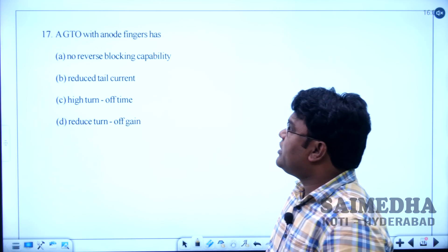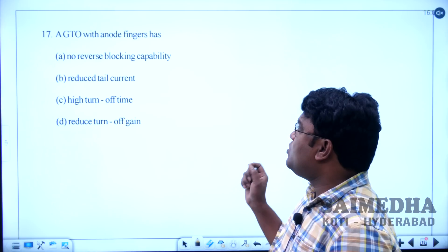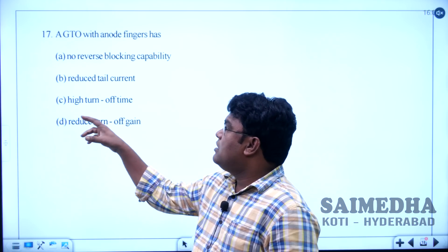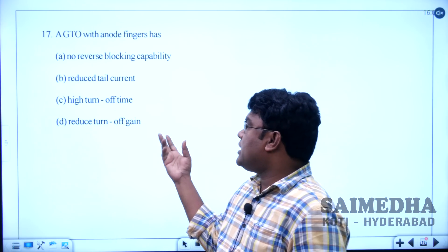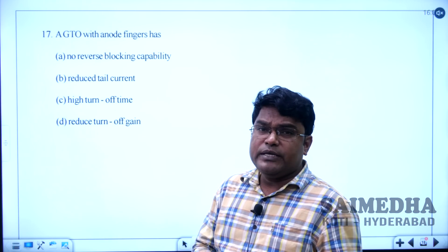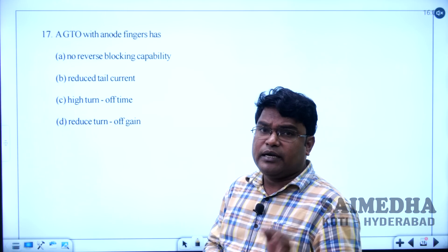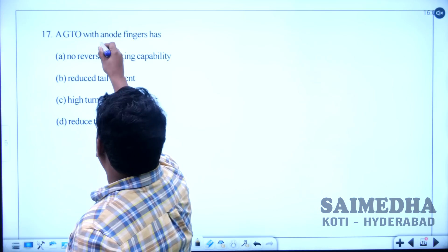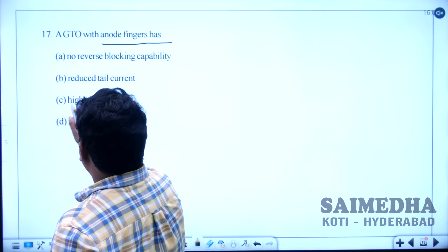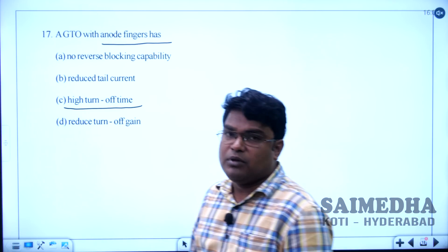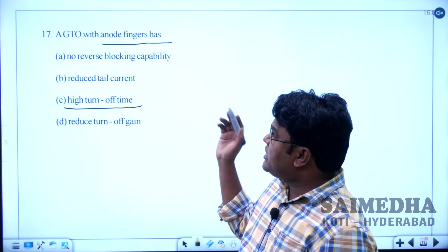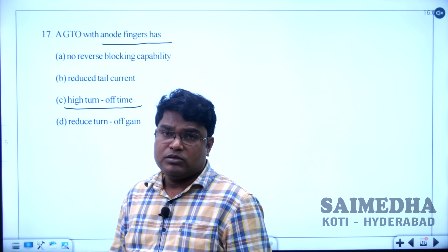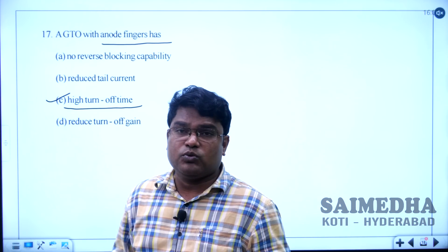Let us solve question number 17. A GTO with anode fingers has no reverse blocking capability, reduces tail current, and reduces turn-off gain. The GTO is a gate turn-off thyristor that can be turned off by applying negative gate pulses. The answer for this question is option C.